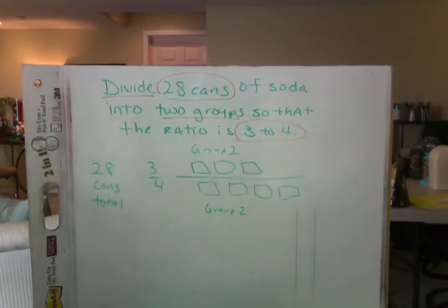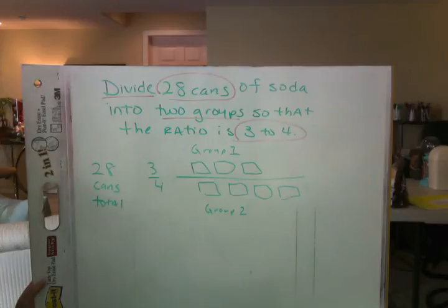How do you know it's 3 and 4? Because the ratio is 3 to 4, so you're going to put 3 in the first and 4 in the second. Okay, what do we do next?